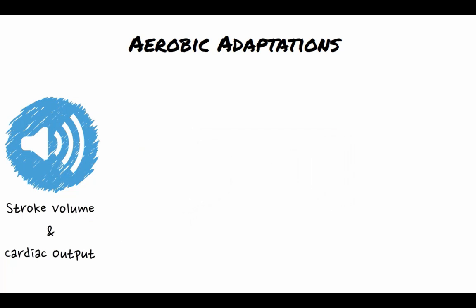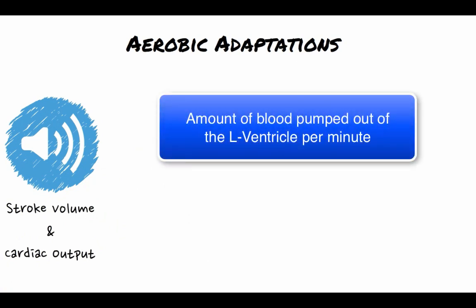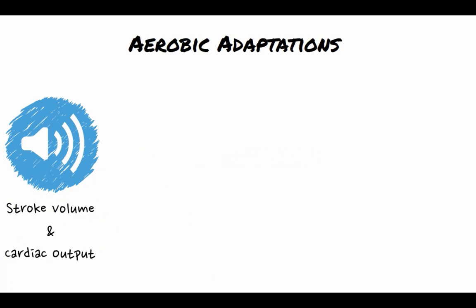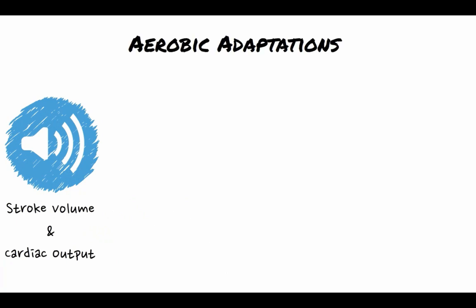Stroke volume is directly related to cardiac output. Cardiac output is the volume of blood pumped out of the left ventricle per minute and is calculated by taking the stroke volume and multiplying it by the number of beats per minute to determine the volume moved each minute. Training, especially aerobic training, will cause an increase in cardiac output. This is because of the increase in stroke volume, allowing the heart to move more blood around the body at any heart rate than it did before training.